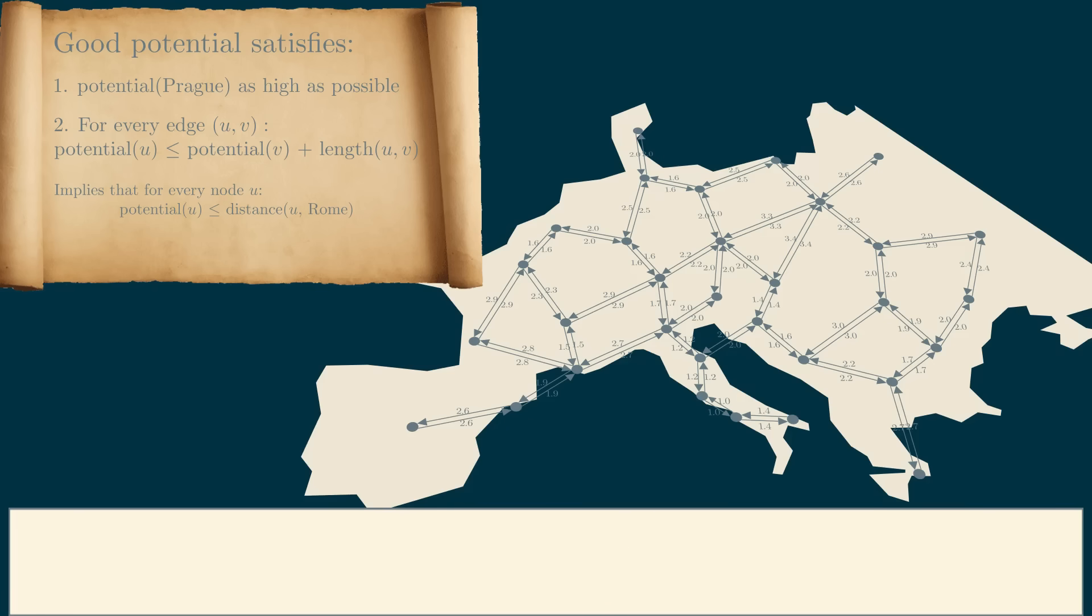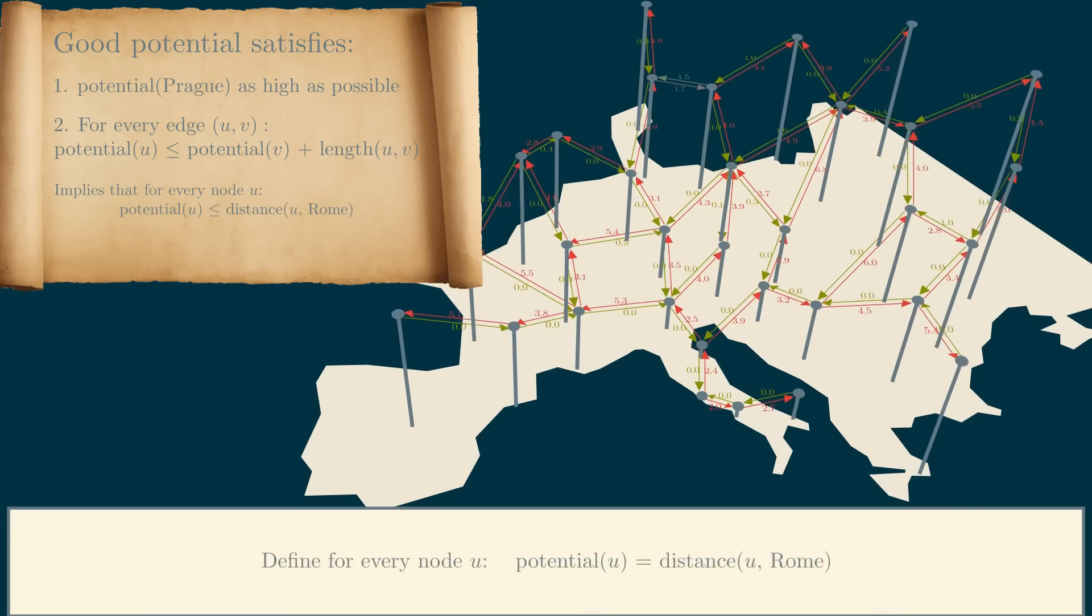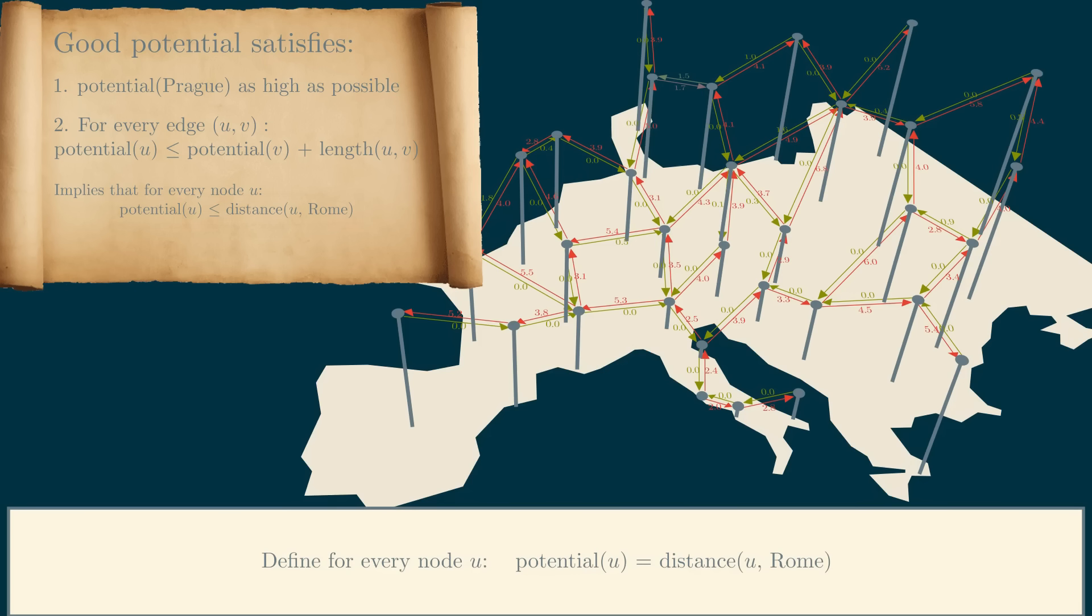Let's see some examples now. First of all, what happens if we simply choose the potential of every node to be the distance from that node to Rome? That's actually the best potential we can hope for. First of all, this inequality is satisfied, and I leave it to you to check the more complicated condition. And second, since the potential of Prague cannot be higher than the distance from Prague to Rome, our choice of potential clearly elevates Prague as high as possible. This choice of potential is so amazing that if we apply potential reweighting and run Dijkstra's algorithm on the new graph, the algorithm simply walks along the shortest path to Rome, and it doesn't even bother exploring anything else. It's so amazing that it's also pretty suspicious. So, do you see the problem?